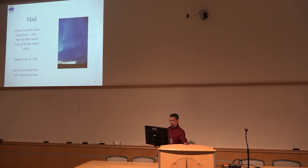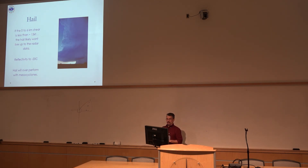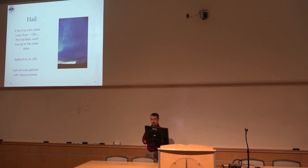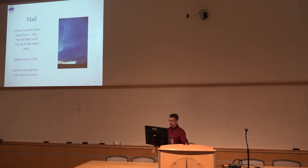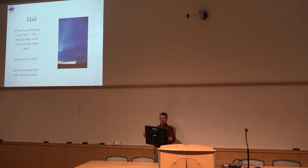I want to quickly mention hail since not everything is tornadoes. I've noticed that if the zero to six kilometer shear is less than 15 knots, the hail probably doesn't make it to the ground or at least underperforms what you'd expect from the radar. I like reflectivity at the minus-20°C level, knowing the shear, and knowing if there's a mesocyclone in there — give me those three things and I can guess hail size to some degree.